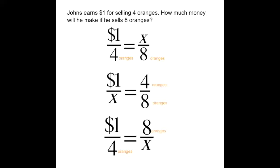We can look at it and know that if he sells four oranges for a dollar, then he would sell eight oranges for twice as much, or two dollars. But we're going to use this one as an example to help us with the more difficult ones.